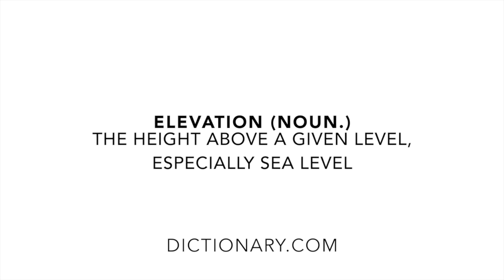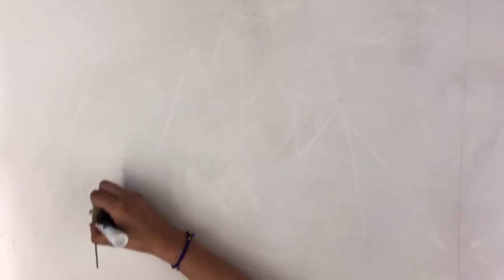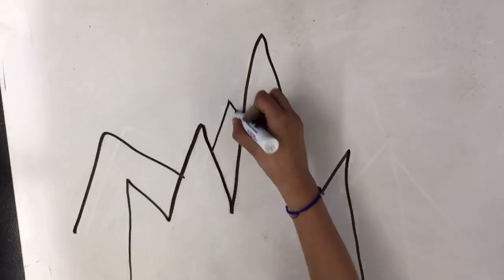Elevation is the height above a given level. How come at point B, it's colder than at point A?